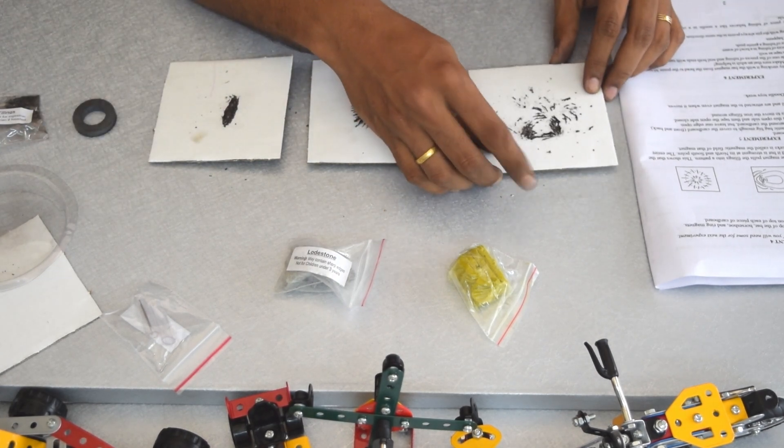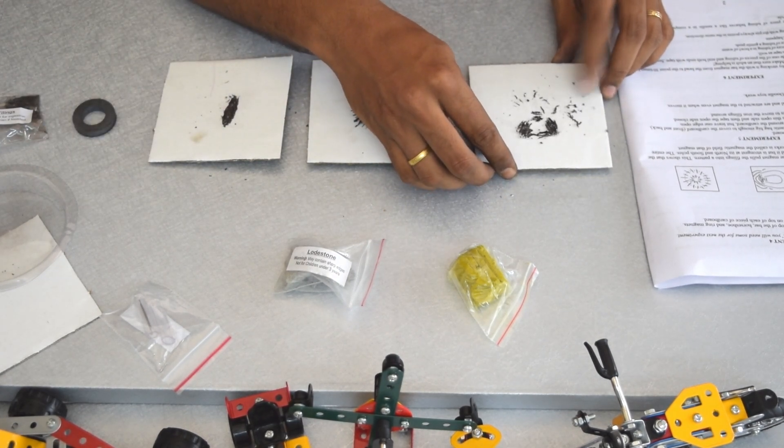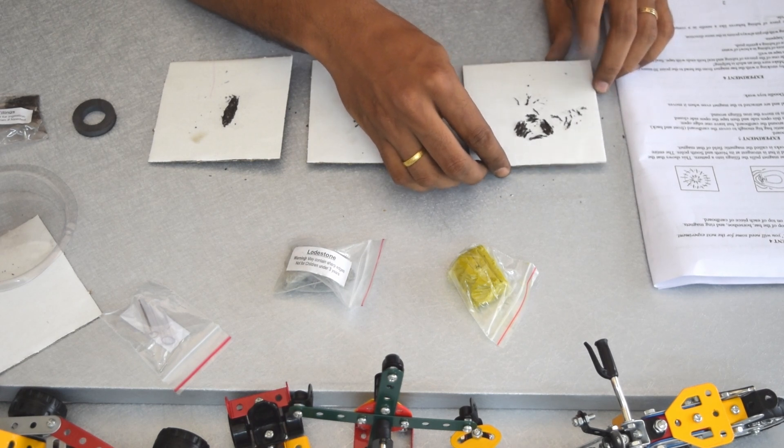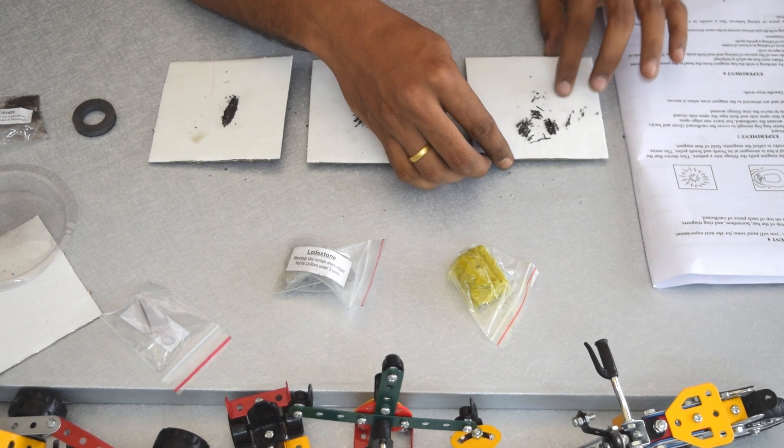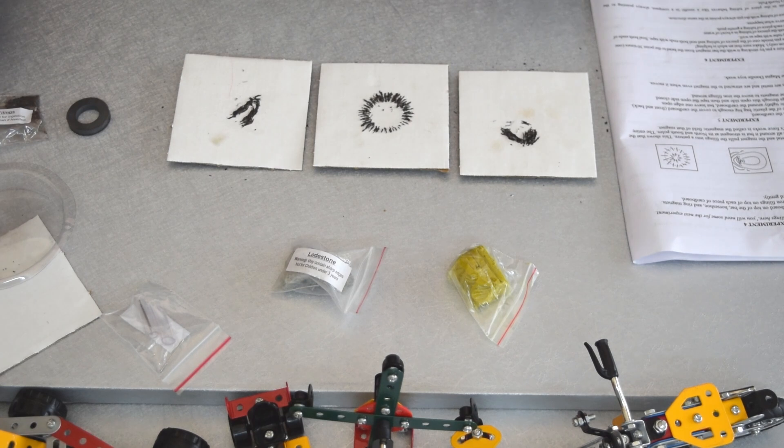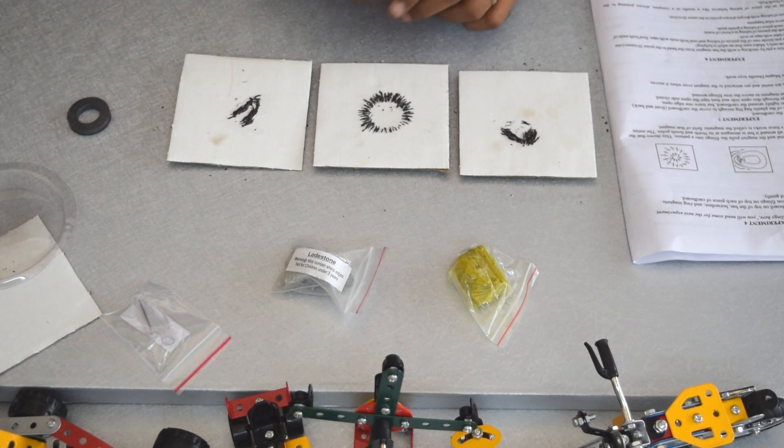This is the horseshoe magnet, let's tap that as well. Experiment four is complete. Let us move to experiment five.